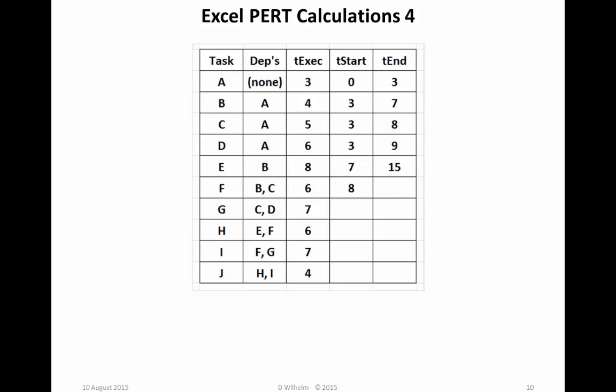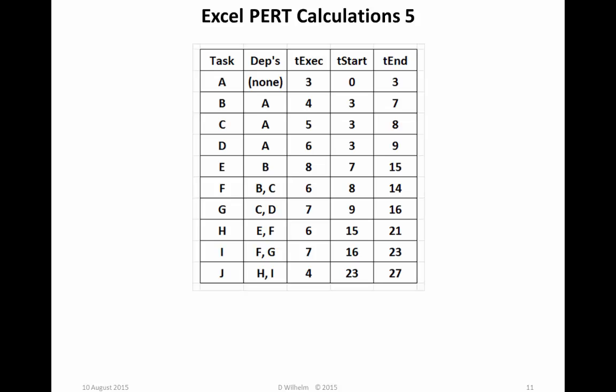The Time End F is just its execution time plus the start time. And for the rest of the tasks G through J, the same type of formula applies. The Time Start for any of those tasks is the maximum of the time ends of their dependent tasks. If you're unfamiliar with the Excel functions, especially max, you can find information on those in Excel under the Functions Information tab. And Time End J is the cumulative elapsed time for the entire project.